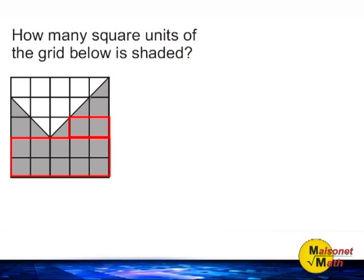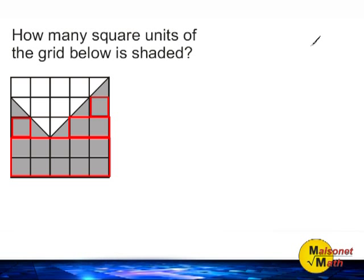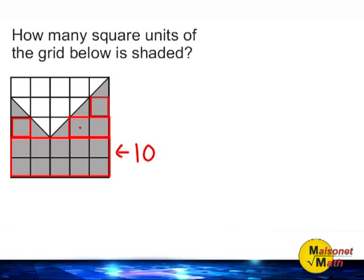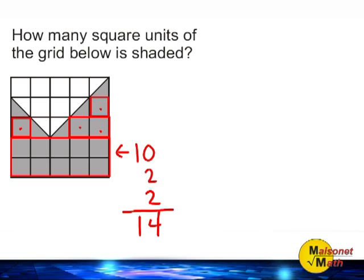Right here we have two more units, right here we have one unit, and right here we have one more unit. So we're going to add all of those square units together. In this section we have ten, in this section we have two, and we have one here and one here, which is two more. So that gives us a total of fourteen whole square units.